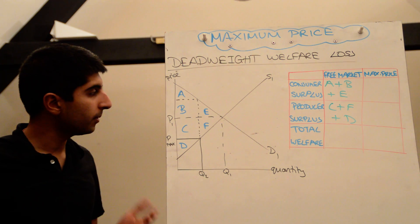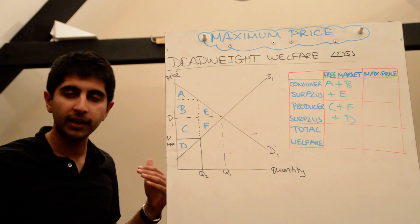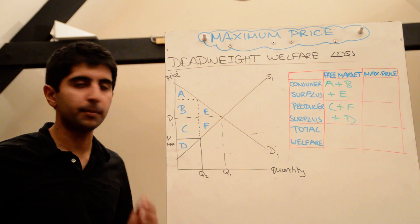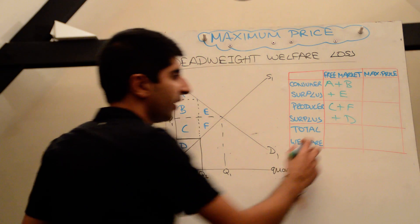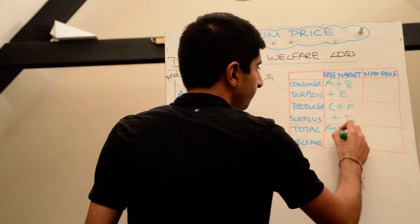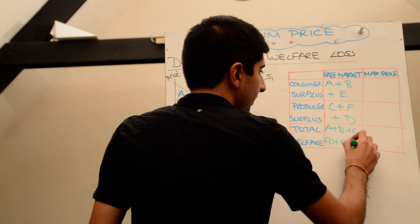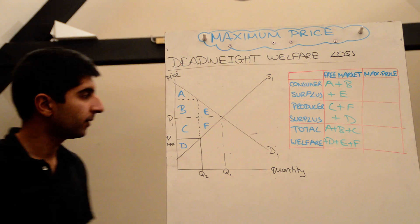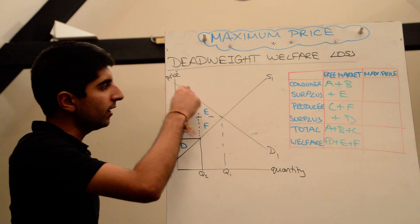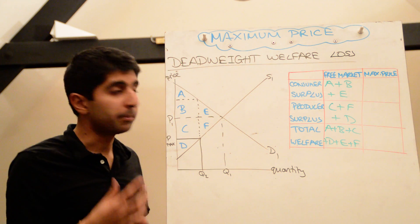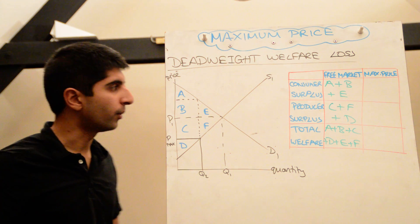To work out consumer surplus, the area above the price below the demand curve, and to work out producer surplus, the area below the price above the supply curve, gives us a total welfare of A plus B plus C plus D plus E plus F. So this total triangle here represents total welfare in the free market before a maximum price was imposed.